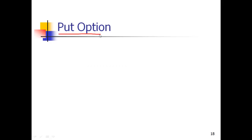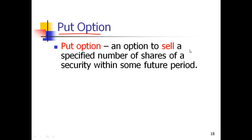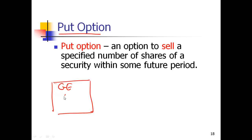We'll now talk about put options. A put option is the right to sell. Here is the definition: a put option is an option to sell a specified number of shares of a security within some future period. This is a contract, and the underlying asset can be shares of, say, General Electric. You have a strike price of, say, 25, and a maturity date of, say, 30th June.